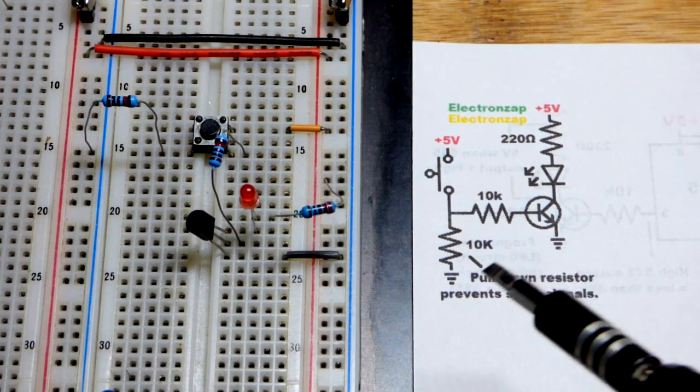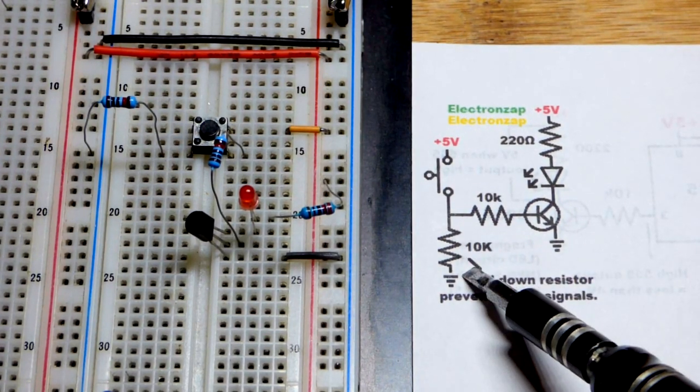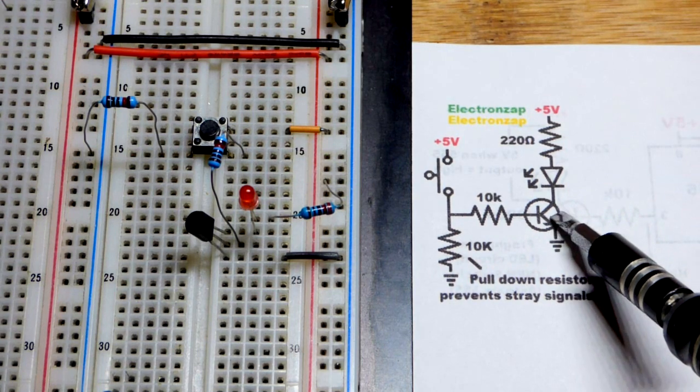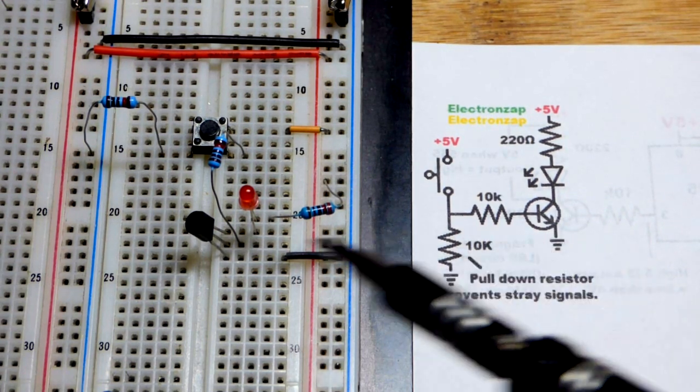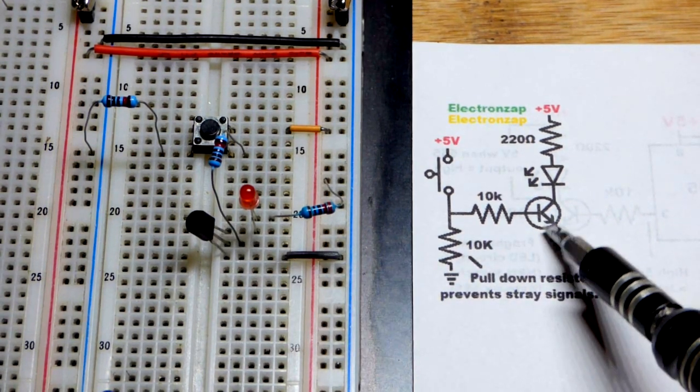In this video, we're going to focus on the pull-down resistor with an NPN bipolar junction transistor. We're using the 2N3904.